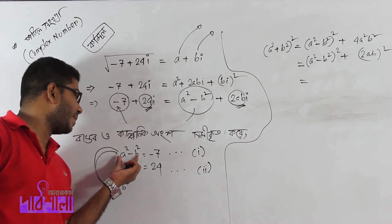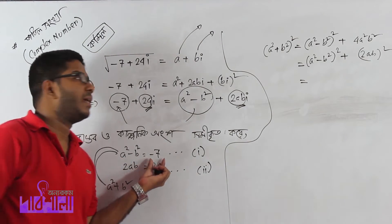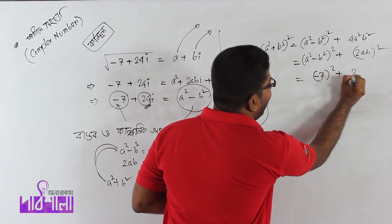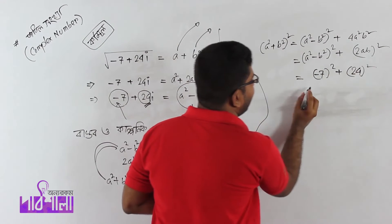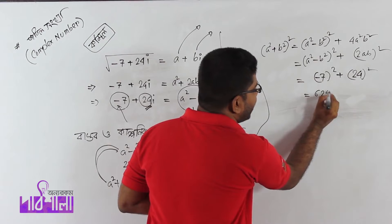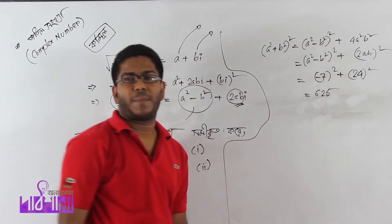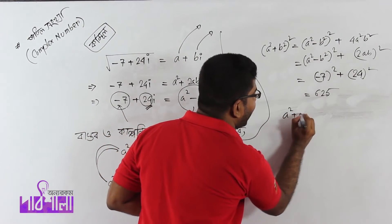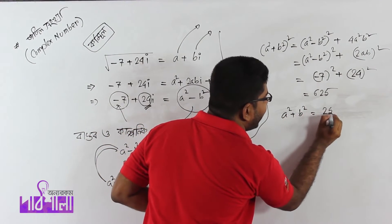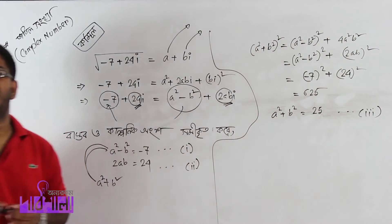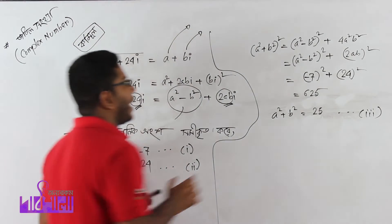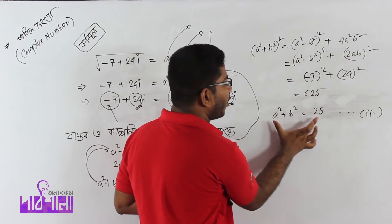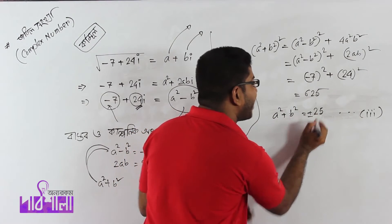A squared minus b squared value is minus 7, and 2ab value is 24. Calculate: minus 7 squared plus 24 squared gives 49 plus 576 equals 625. So a squared plus b squared whole square equals 625, meaning a squared plus b squared equals 25.